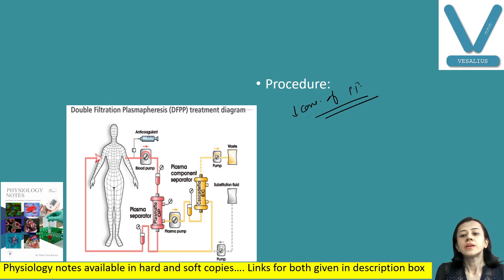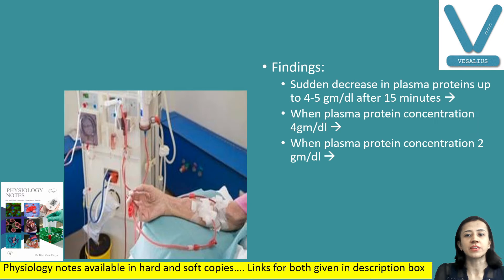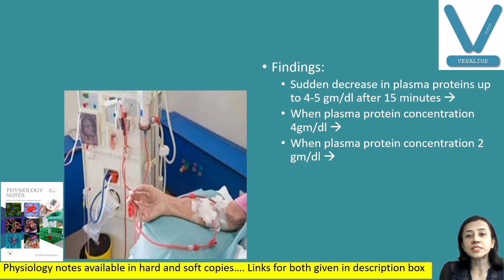When the rate of withdrawal is more than the rate of regeneration, that results in a decrease in the plasma protein level. Some of the findings when we have performed this experiment: there is a sudden decrease in the plasma protein.